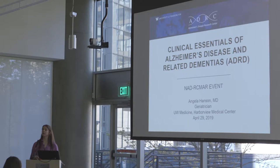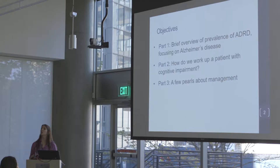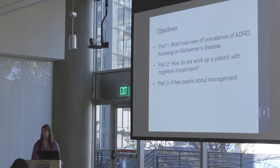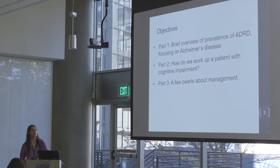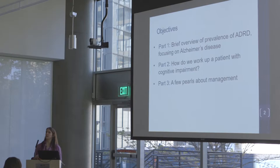I'm going to talk through a broad overview of some of the things that I work on and that we deal with in our clinic. A brief overview of prevalence of Alzheimer's disease and other dementias, and then think about what I do in the clinic when I see a patient saying they're having trouble remembering. And then a few pearls I've learned over the years about managing patients with memory loss.